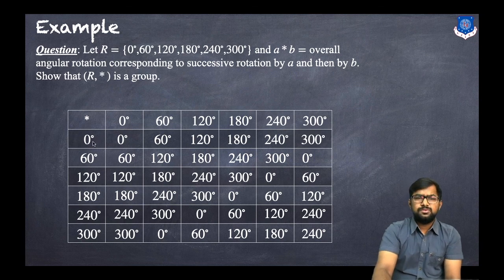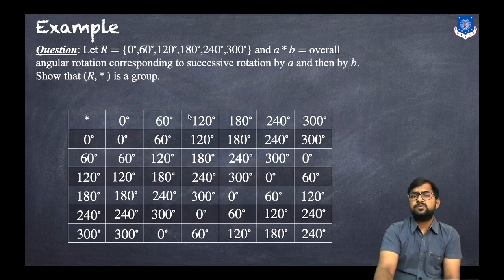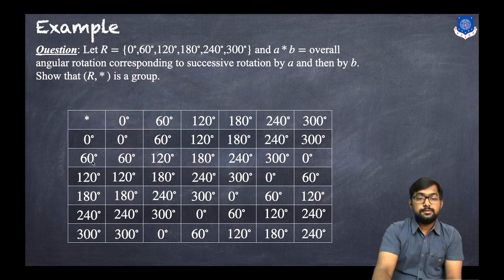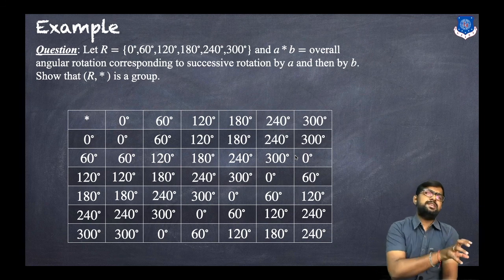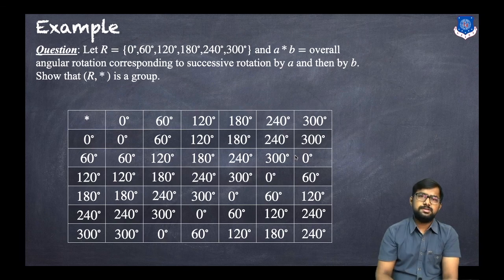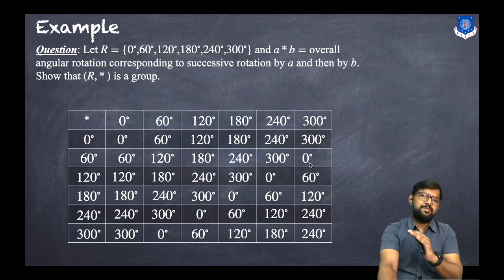To fill the table: 0 + 0 = 0, 0 + 60 = 60, and so on — the first row is straightforward. For 60 + 240 = 300. For 60 + 300 = 360, but 360° is the same as 0°, so we write 0. The entries are computed modulo 360°. In this way the full table is constructed with entries only from the given set R.